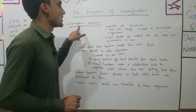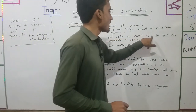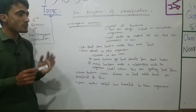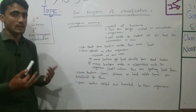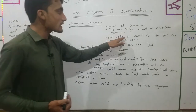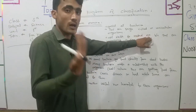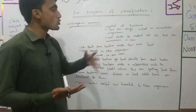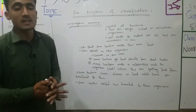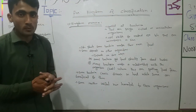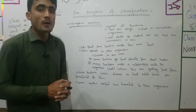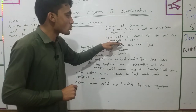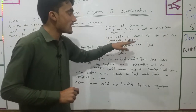Bacteria are not visible to the naked eye because they are microscopic in size. 'Visible' means decayed or seen. They are not visible to the naked eye because the size is microscopic — 'micro' means small. You cannot see them without a microscope.